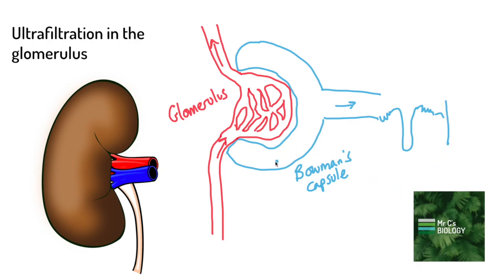So that's our Bowman's capsule over here. Blood is filtered from the glomerulus into the Bowman's capsule. One way we can think about this is it's a bit like clearing out one of your drawers at home.